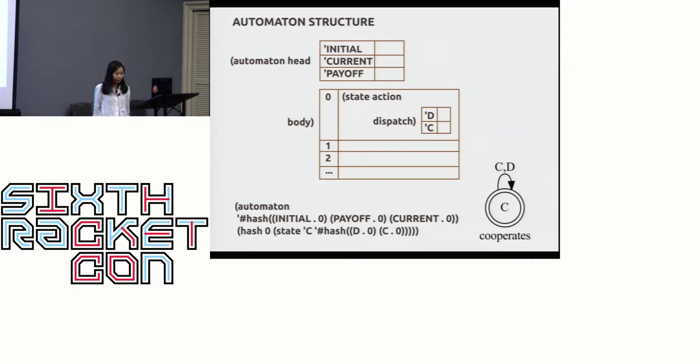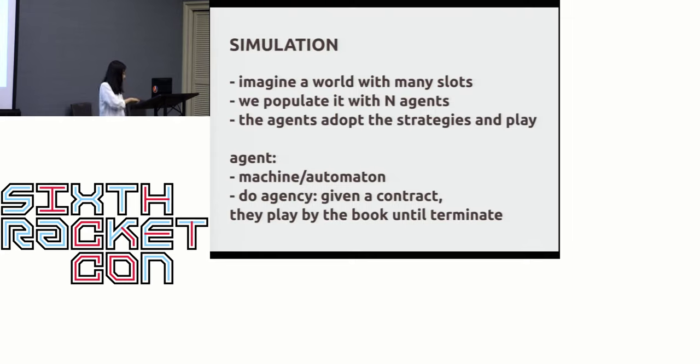With this kind of reasoning, we have the automaton structures like this. All the tables are hash tables. I show here the example of the always cooperate machine, and you see that it has only one state, state zero, and the action in the state is to cooperate. The dispatch, the transition rule, is that if the opponent plays defect or cooperate, it stays in the state zero of cooperating.